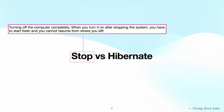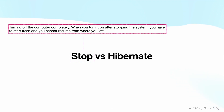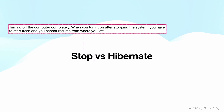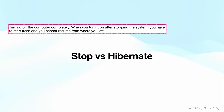Instead of stopping the computer, if you hibernate your computer, it is like putting the computer into sleep mode. When you hibernate your computer, it saves exactly what you are working on — like which applications are open and their state — to your hard drive, and then it goes to sleep. When you wake the computer up by pressing any key or clicking, you do not have to start fresh and you can resume the work from the state before hibernation.